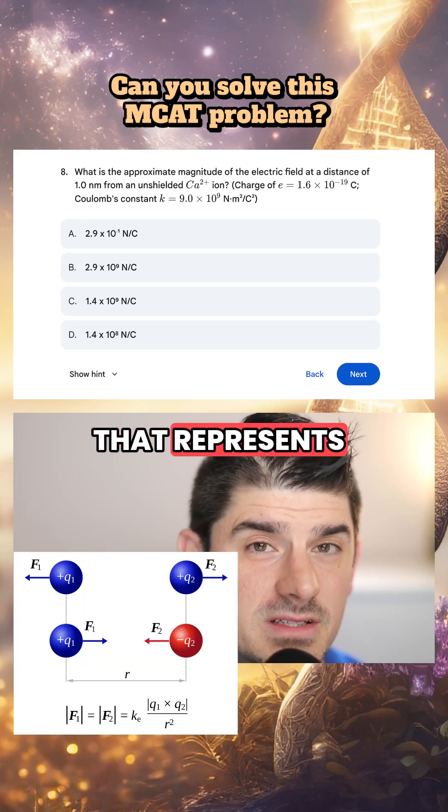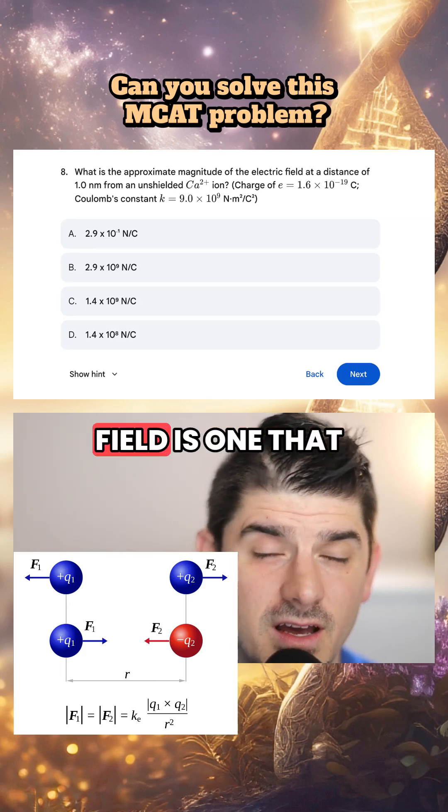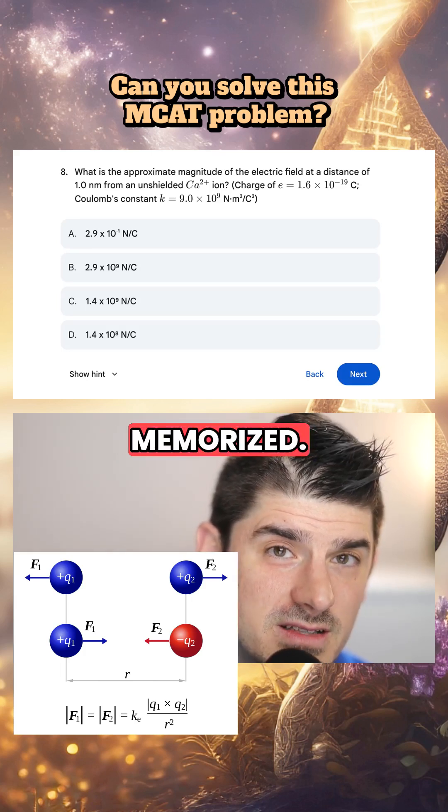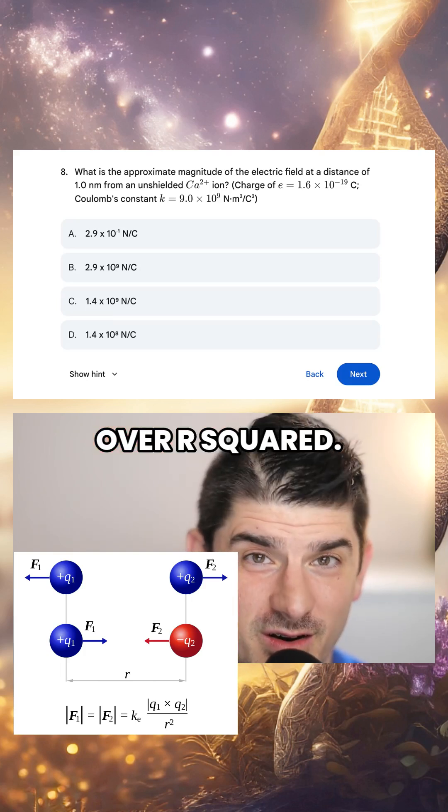Now, the equation that represents the relationship between the electric charge and the electric field is one that we should have memorized. E equals KQQ over R squared.